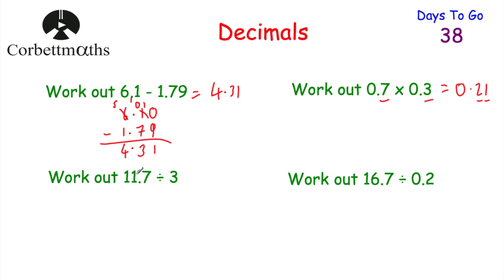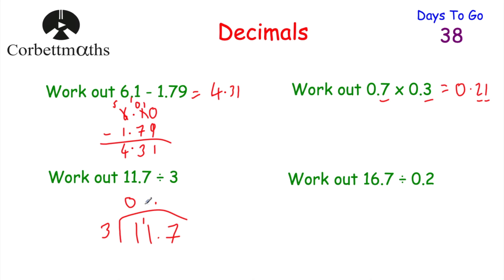Next, we work out 11.7 divided by 3 using the bus shelter method. How many 3s go into 1? Zero remainder 1. How many 3s go into 11? Three remainder 2. How many 3s go into 27? Nine. So the answer is 3.9.